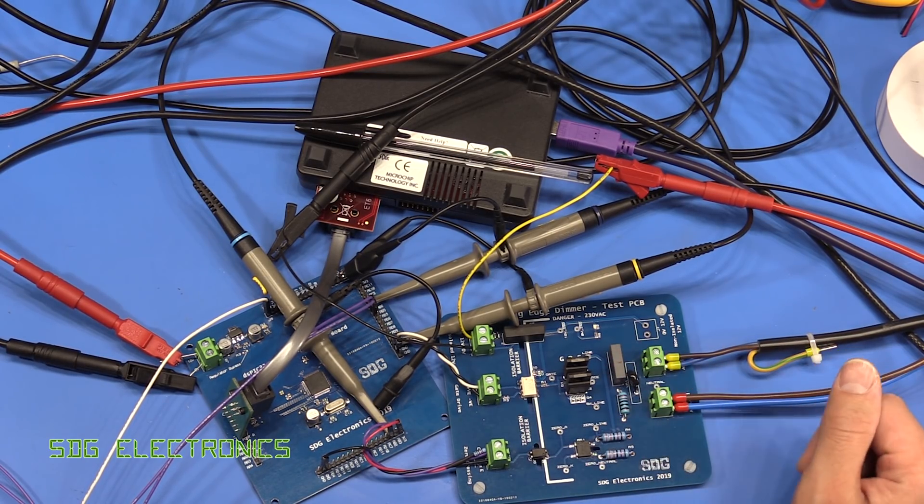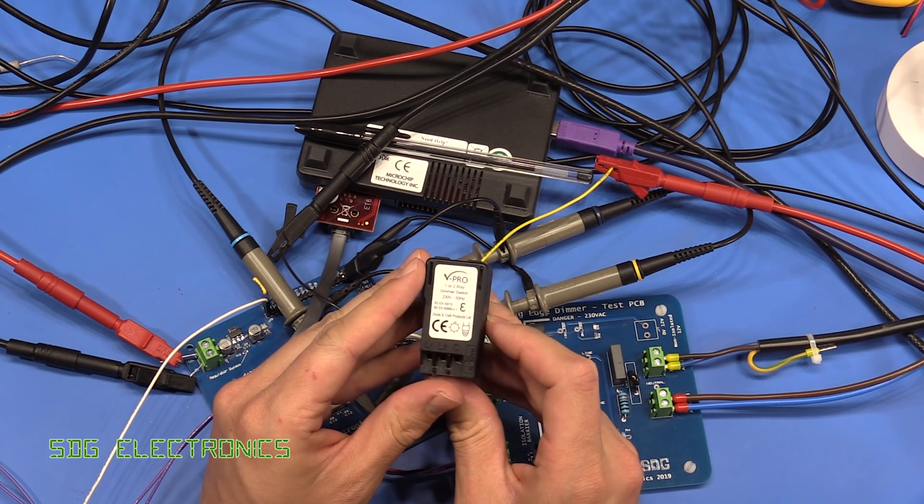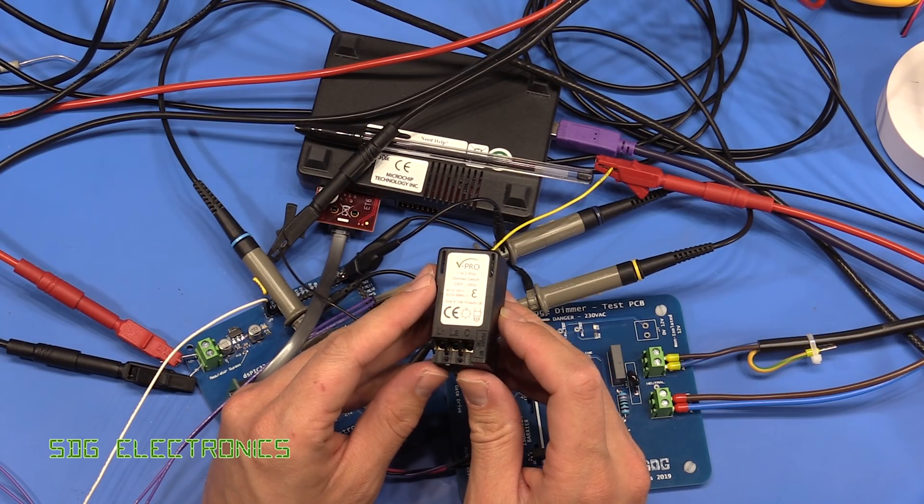Otherwise it was because we had such a high inrush current. And just as an aside this is a Varilight vPro dimmer and we'll do a little bit of analysis in the next video I think.